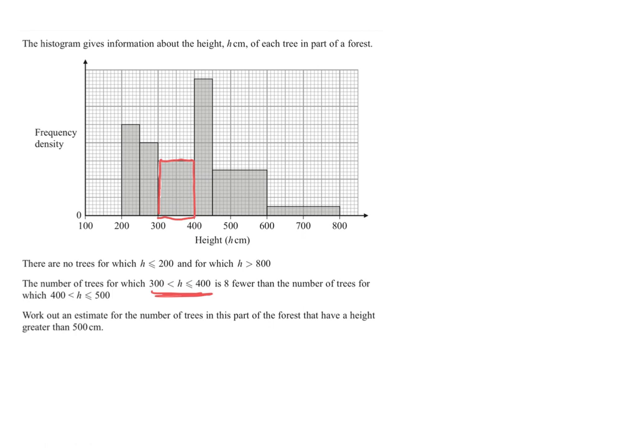And then that is 8 fewer than the number of trees between 400 and 500. So 400 to 500 is this bar plus this section of the second bar. So that's really what we're looking at here. And we're saying the difference between these is 8. So there are 8 fewer in the red bar than there is in the blue shape.